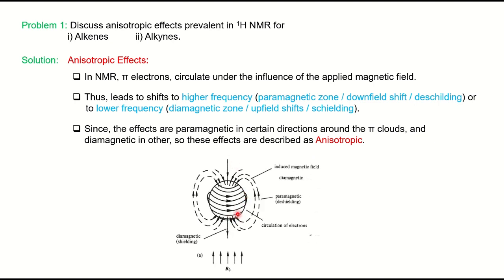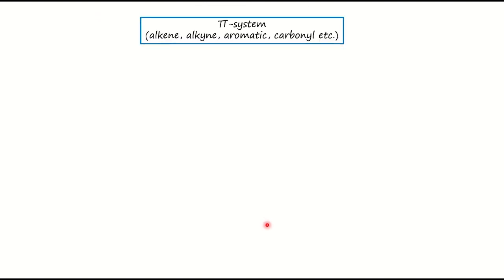Now we will take a simple molecule — say a hydrogen molecule — where you have applied the magnetic field. Once you apply the field, electrons start circulating around the molecule. Because of this circulation, it induces a secondary magnetic field. In the center of the molecule, where the induced magnetic field opposes the applied magnetic field, that zone is called the diamagnetic zone; and where it is parallel to the applied magnetic field, that is called the paramagnetic zone. We will discuss the same concept for alkenes, alkynes, and aromatic compounds.